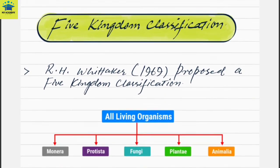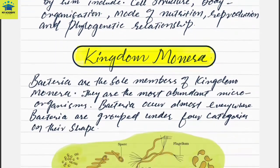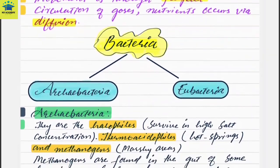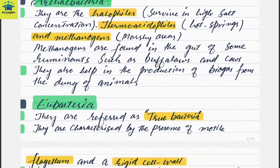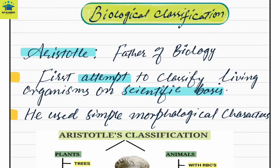Hello and welcome to my academy students. Today we are going to discuss a very important topic — biological classification. It has quite good weightage, as you can see in NEET, questions from biological classification appear every year. So without wasting any time, let us discuss this. Aristotle is called the father of biology. He was the first person who attempted to classify living organisms on a scientific basis.